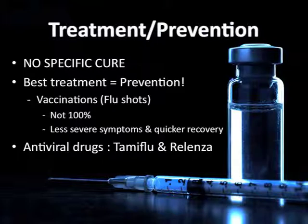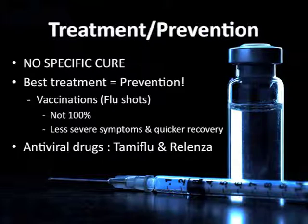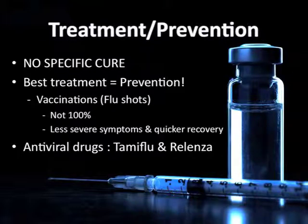If you do contract the flu, there are antiviral drugs that can be used to treat it. Tamiflu, whose generic name is Oseltamivir, and Relenza, with the generic name of Zanamivir, are two antiviral drugs that can treat it. Tamiflu is available as a pill or liquid form. Relenza is a powder that is inhaled, and it is not recommended for people with breathing problems like asthma.